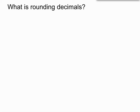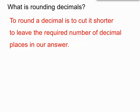What does it mean to round a decimal? To round a decimal is to cut it shorter, to leave the required number of decimal places in our answer. The question will give us the required number of decimal places and it's up to us to cut the original decimal shorter to leave that required number.